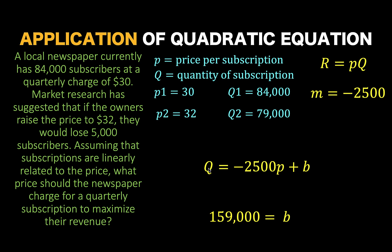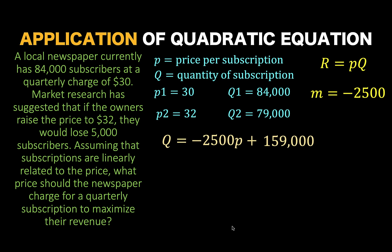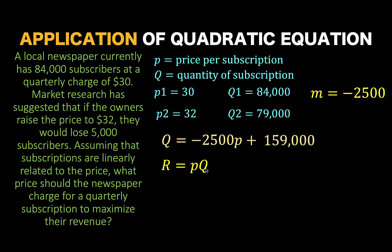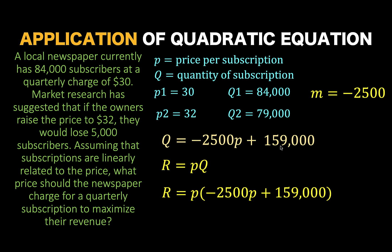Let's remember these values. Looking at the equation for the quantity, we can now replace B by 159,000 to arrive at Q equals negative 2,500P plus 159,000. Then, going back to our revenue equation, R equals price times Q. We already know the value of Q, so substituting this into the revenue function, we distribute P to the binomial and arrive at R equals negative 2,500P squared plus 159,000P. This is now our revenue function.